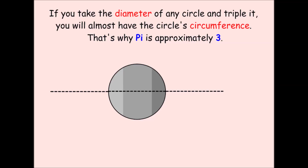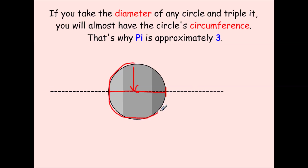An interesting thing about circles is if you take the diameter of any circle — that's a line segment that cuts the circle in half, passing through the center — and you triple it, it would almost perfectly wrap around the outside of that circle, like a string. And this will work with any circle.